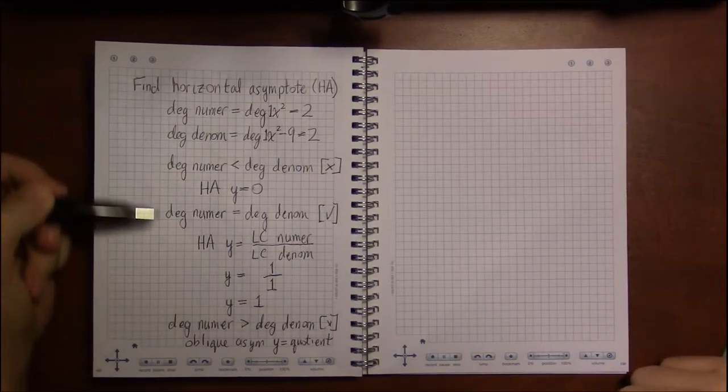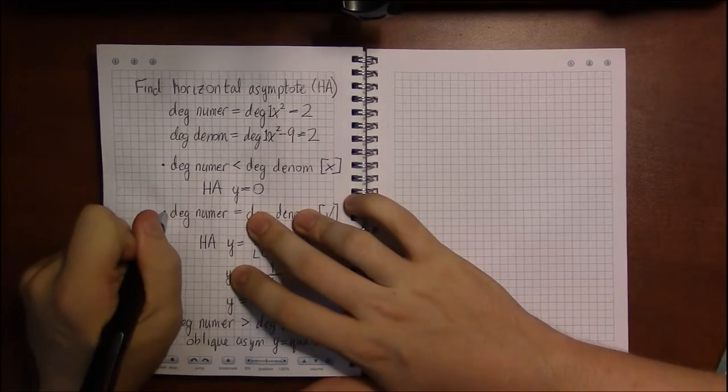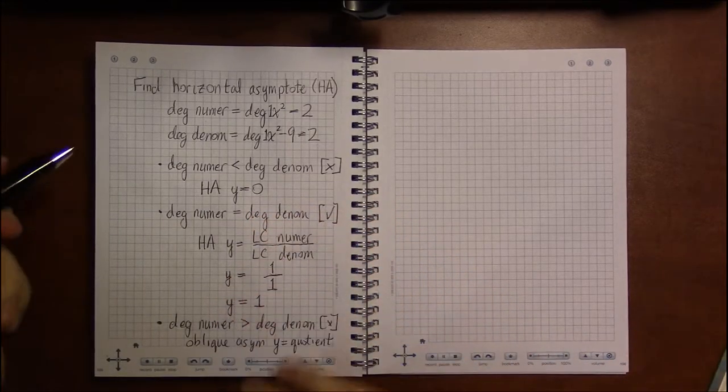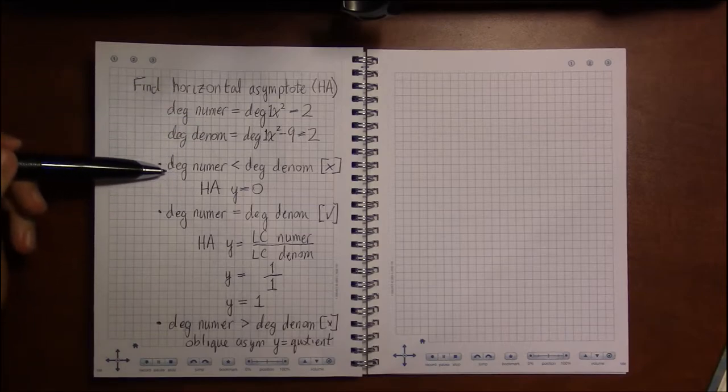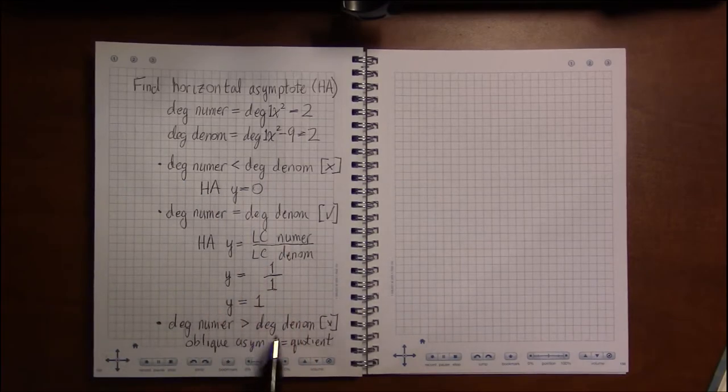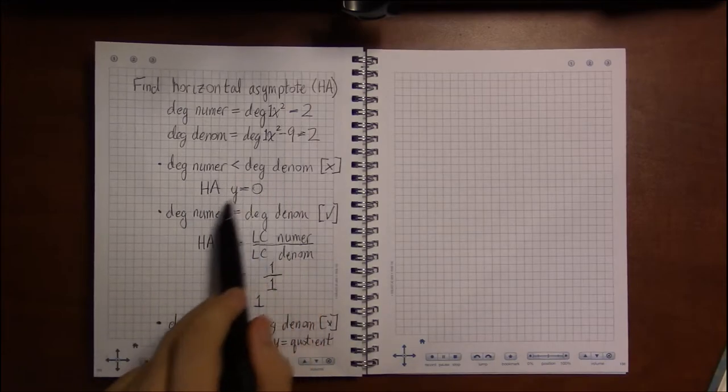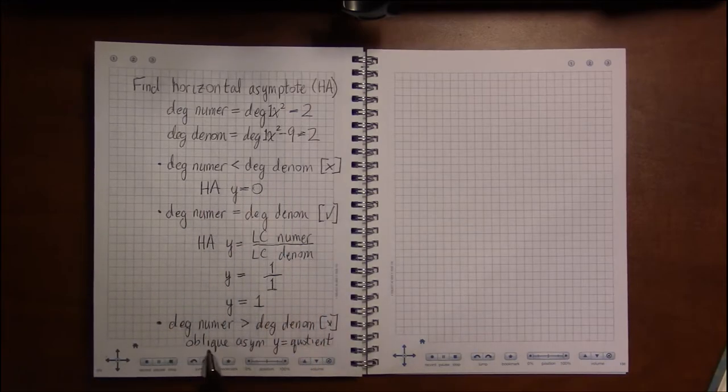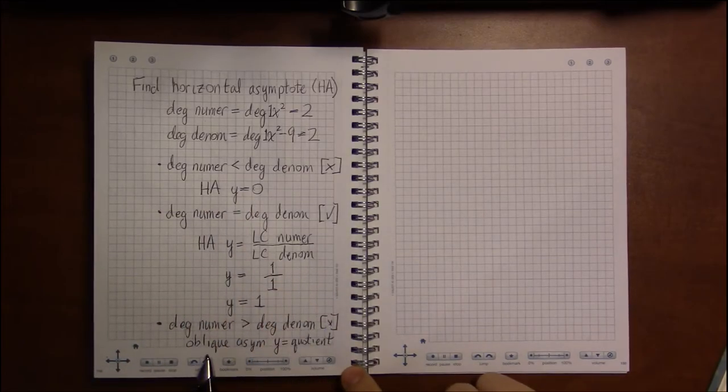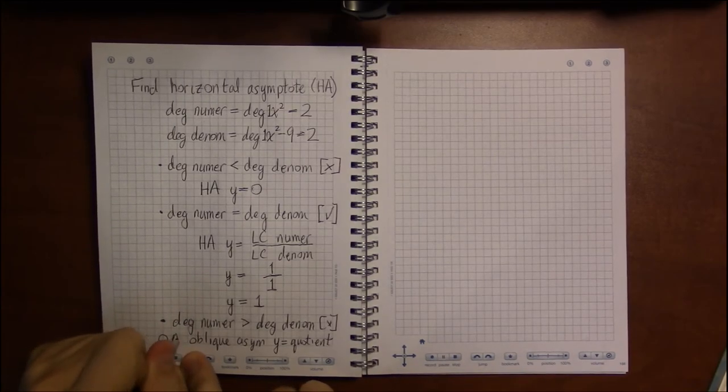And that three-condition process is how you determine horizontal asymptotes. You have to compare the degree of the numerator to the degree of the denominator. Which one is larger, or are they both the same? And in each case, there's a rule for how to determine whether you have a horizontal asymptote and what it is, or whether you have an oblique asymptote, which I abbreviate as O-A.